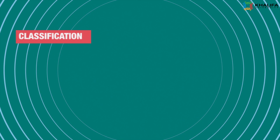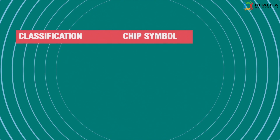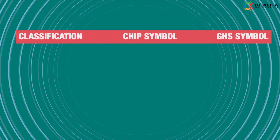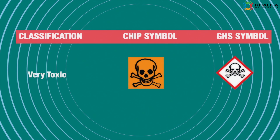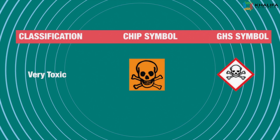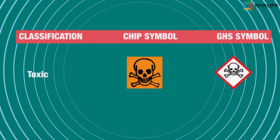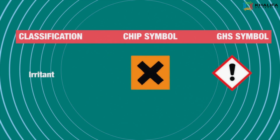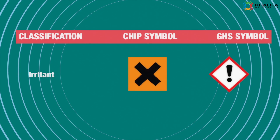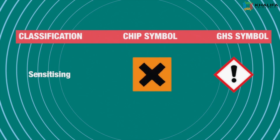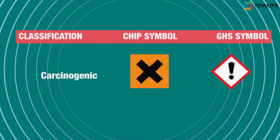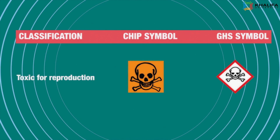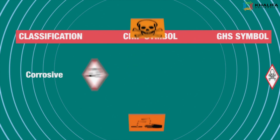The GHS and CHIP classifications include the following hazard categories: Very Toxic, Toxic, Harmful, Irritant, Sensitizing, Carcinogenic, Mutagenic, toxic for reproduction, and Corrosive.